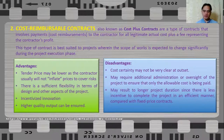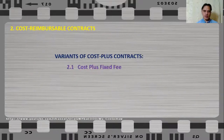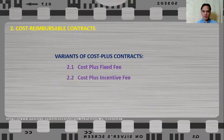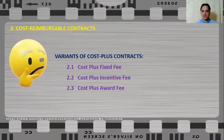Cost reimbursable contracts have the following variants: cost plus fixed fee, cost plus incentive fee, and cost plus award fee. These will be explained in detail in the succeeding slides.